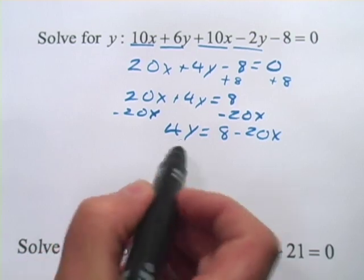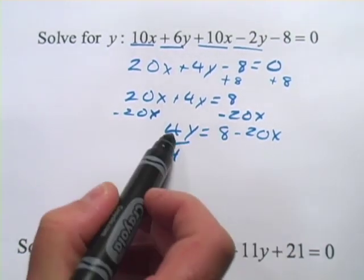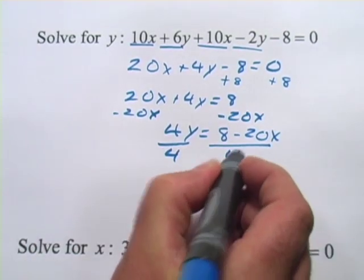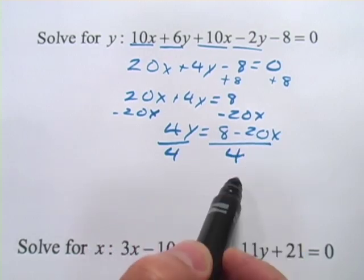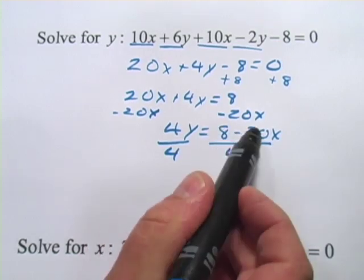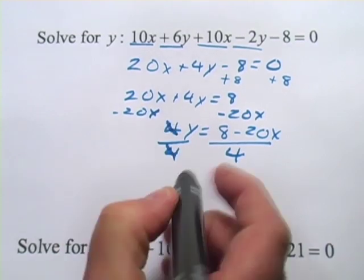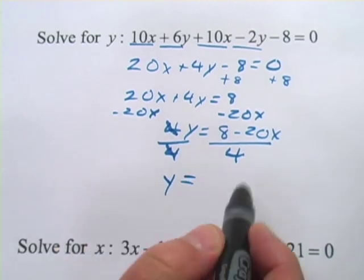And then finally, to get y alone, I'm going to divide by 4. Right now there's a 4 multiplied by the y. I want to undo that. The only tricky thing to remember here is that if you're going to divide by 4, you're dividing the whole side over here by 4. So both of these terms get divided by 4. Here of course the 4s cancel, leaving just y, which is what we want.